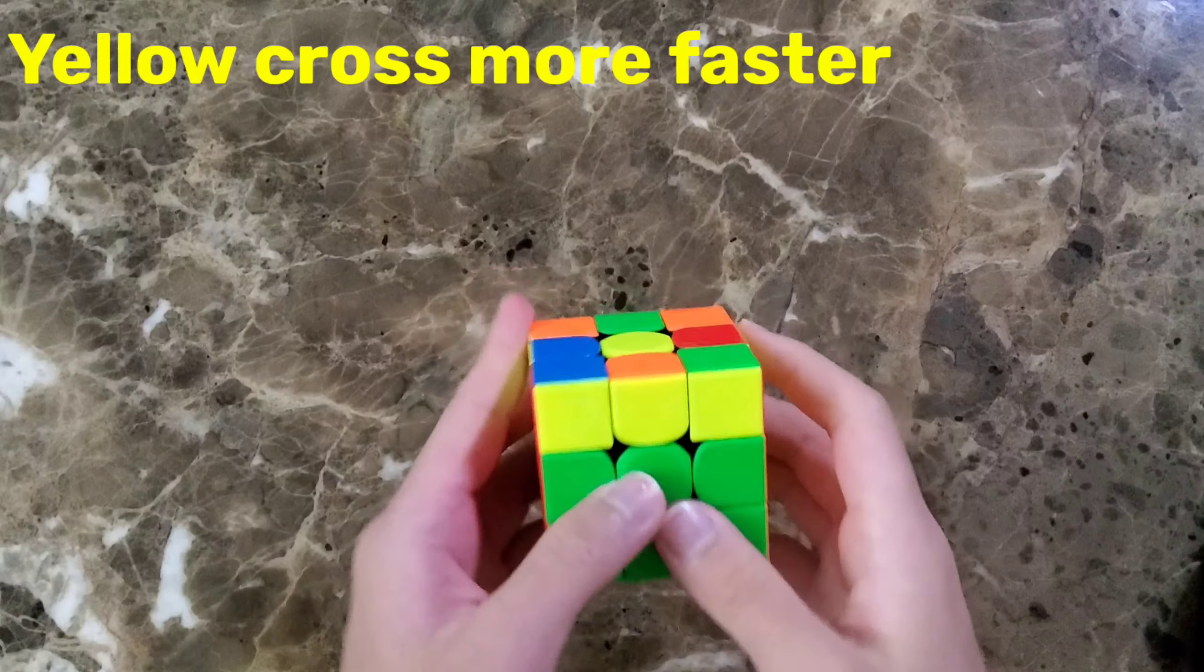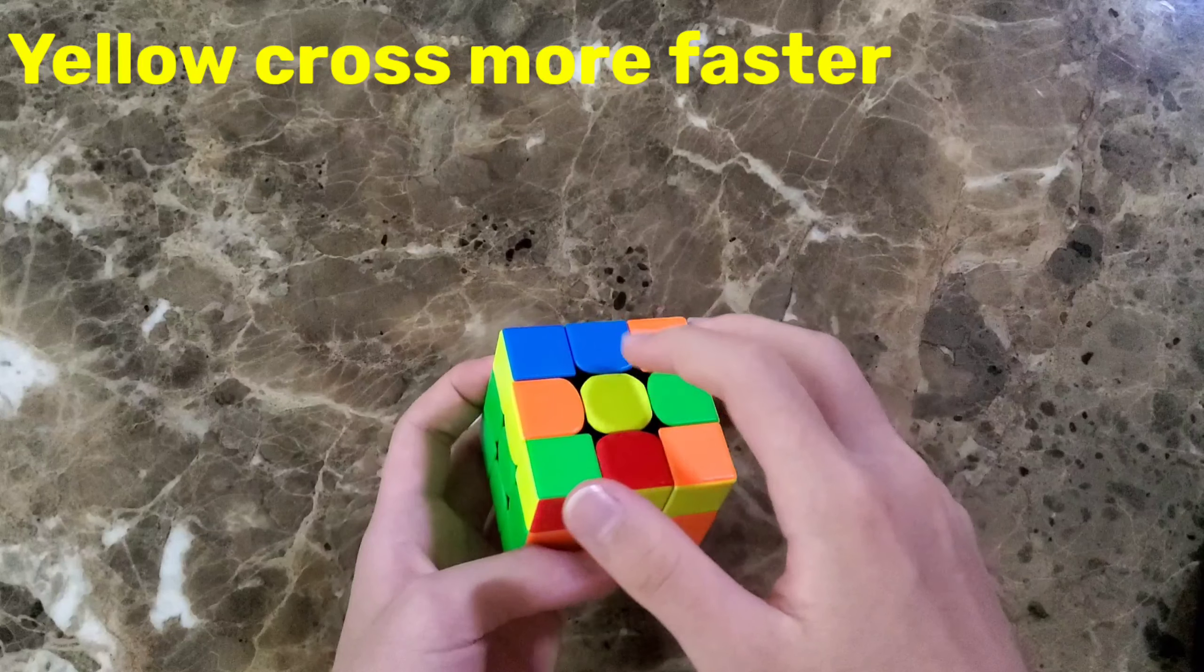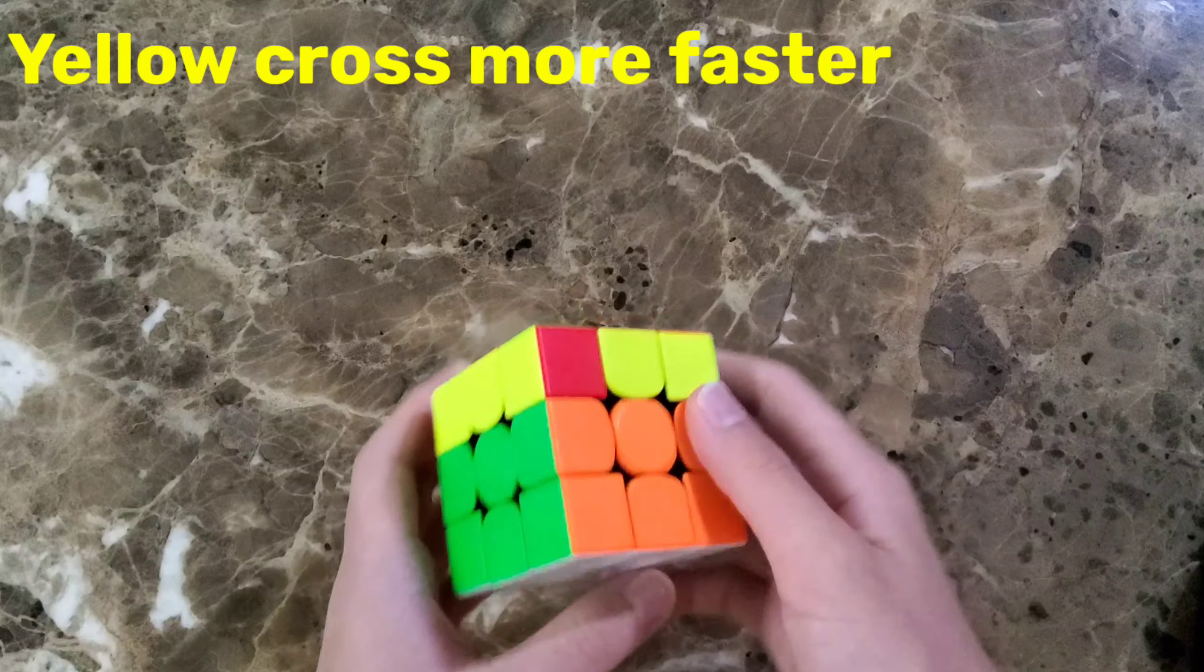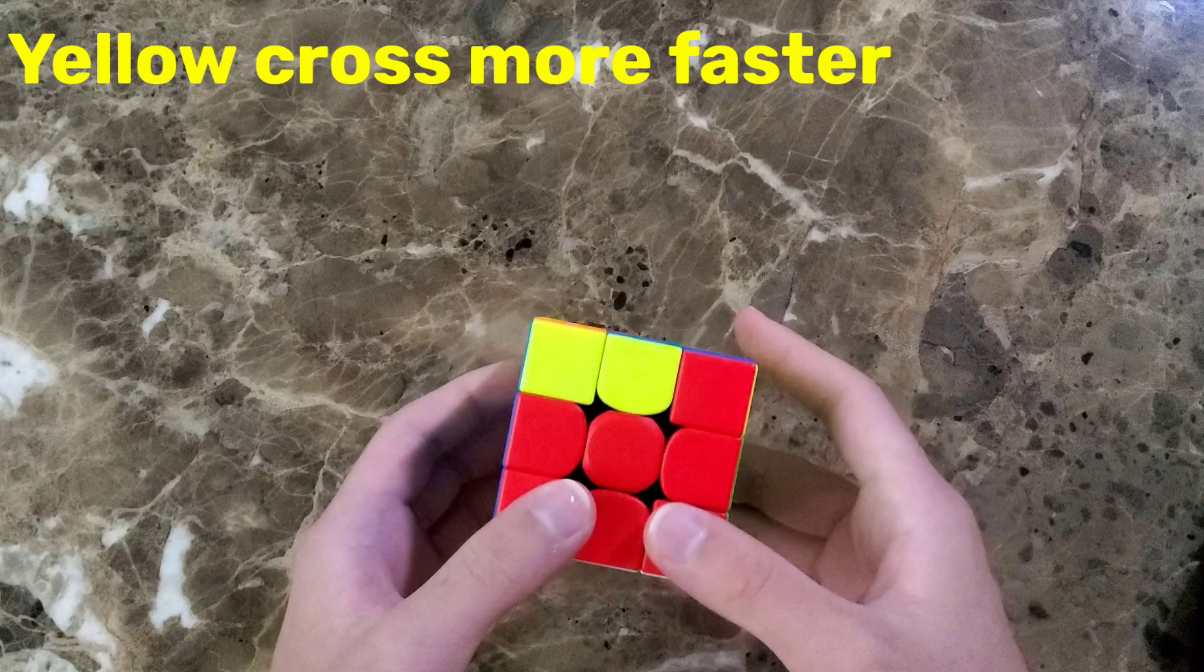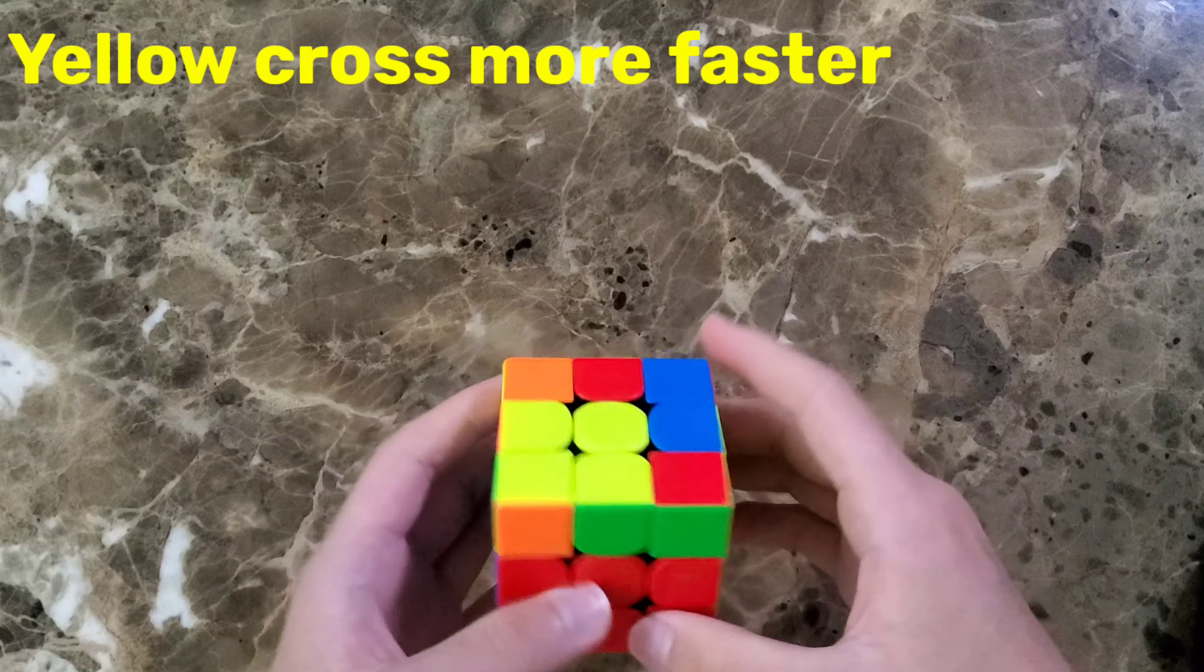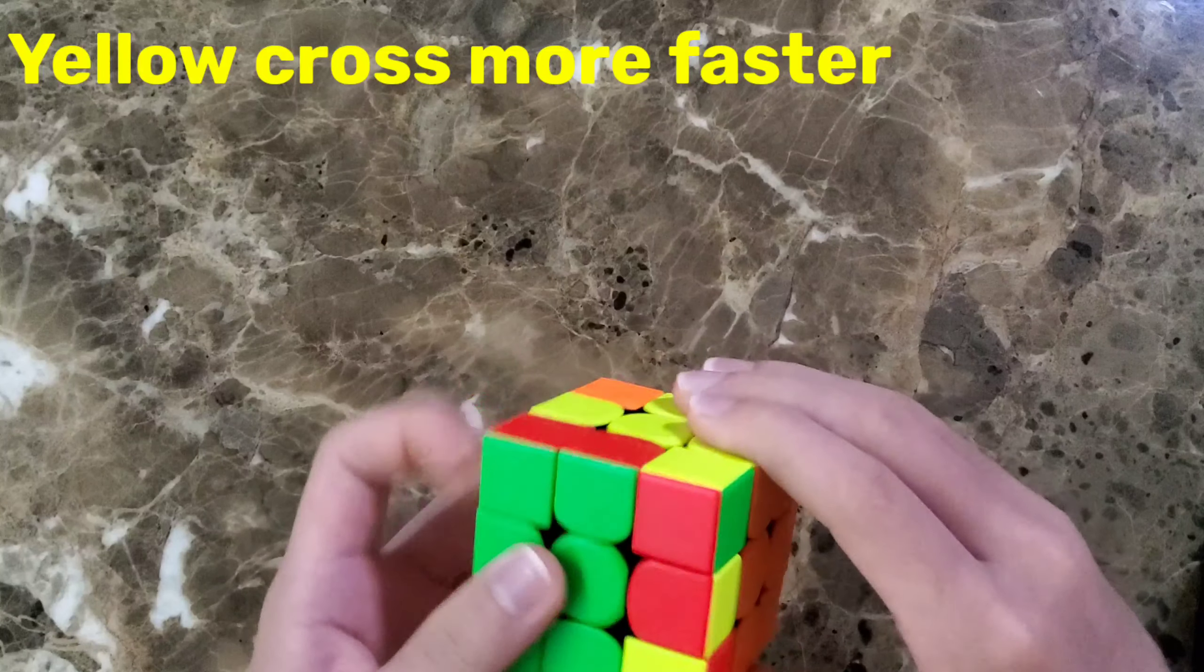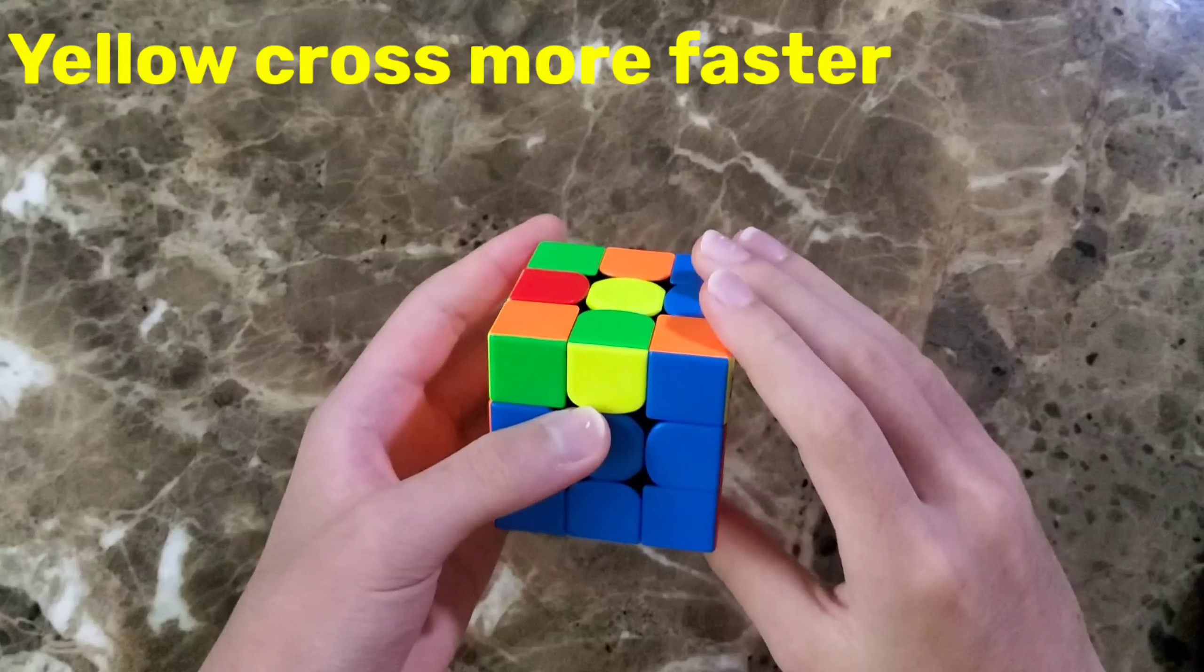If you're not learning F2L, you're making just the yellow cross. And if there is a yellow dot on it, it is bad. So I will show you how to make the yellow cross faster. Many people make a cross like this, and that takes so much time. So here is the tip.